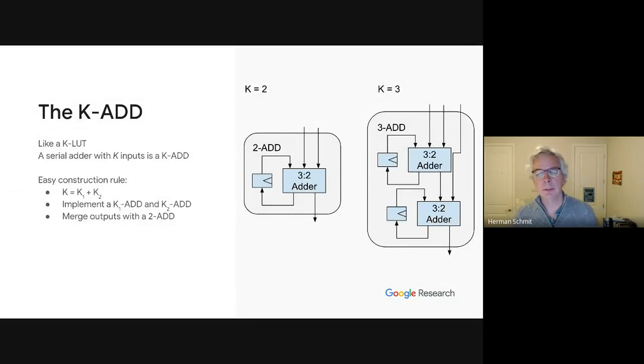So this paper proposes a different kind of functional unit to add, which we're calling the K-ADD, and the naming is to correspond with a K-LUT, which is a generalization of a LUT with K inputs. Similarly, a K-ADD is a bit serial adder that has K inputs and takes K parallel bit streams in.